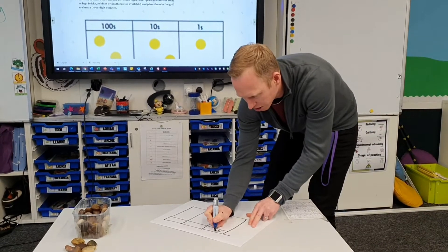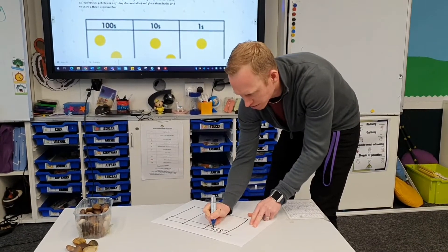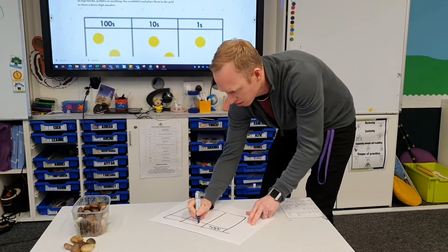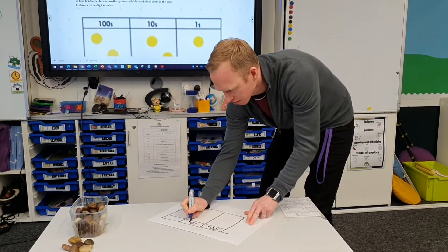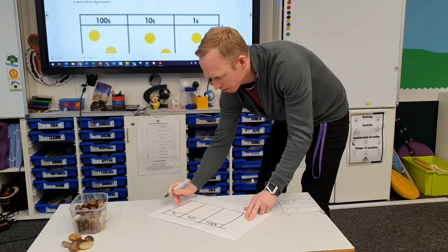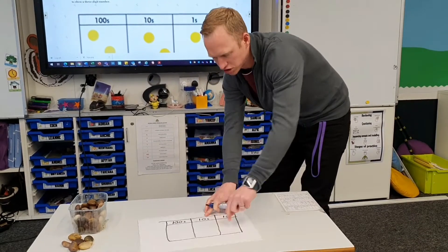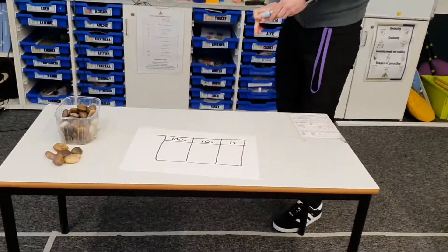Now I'm just going to label my columns. So I've got my hundreds column, I've got my tens column, and I've got my ones column. So it should look like that.